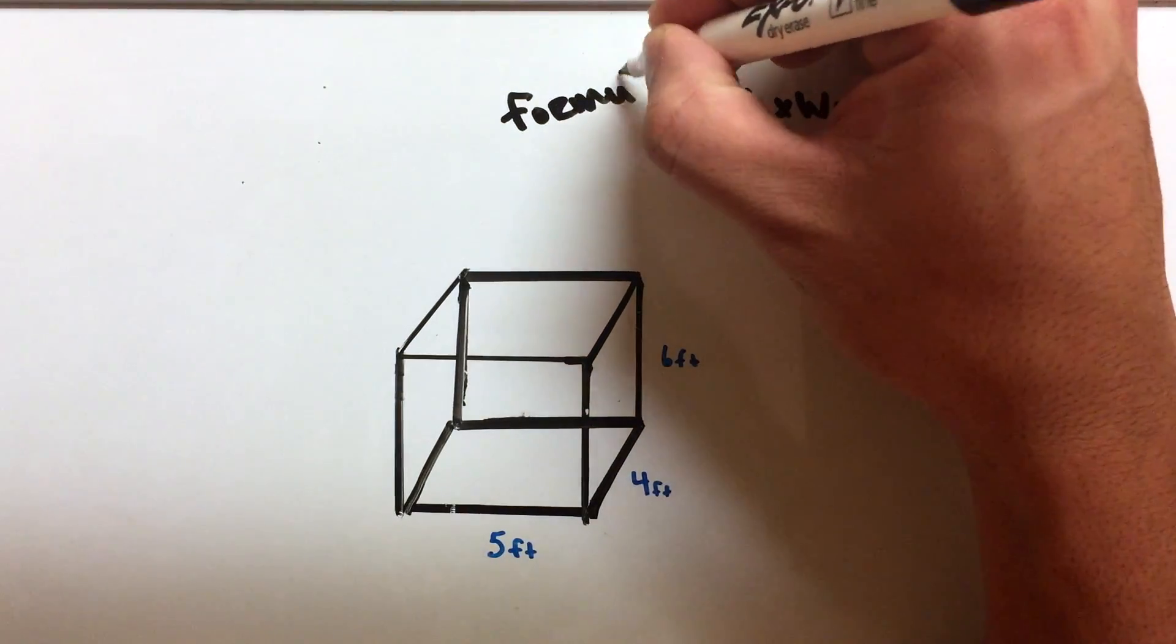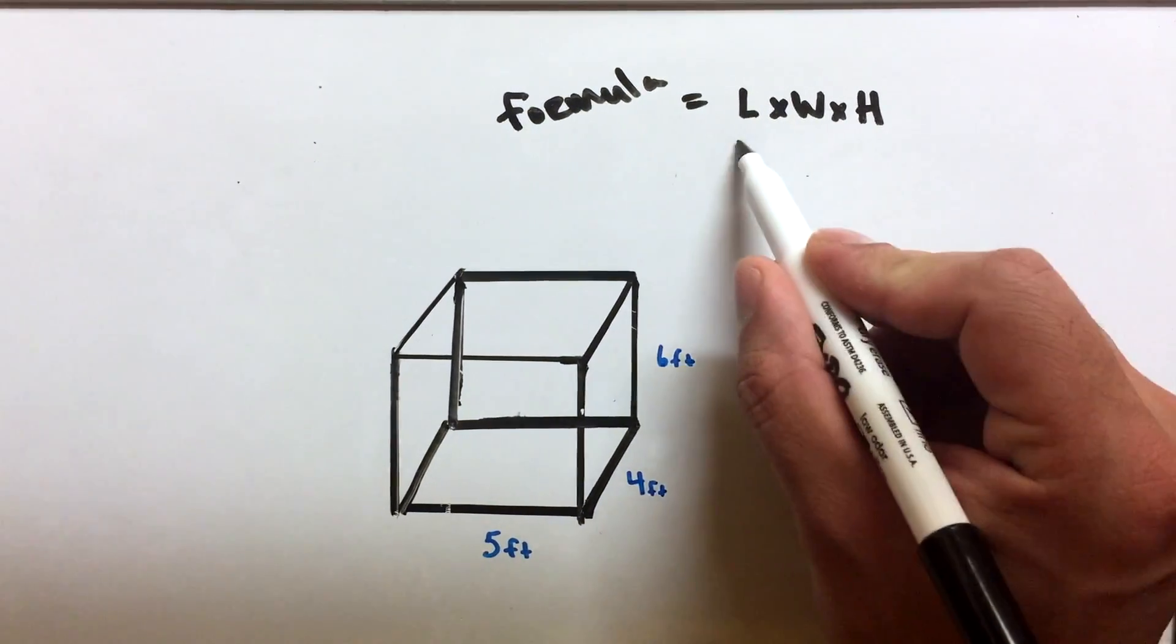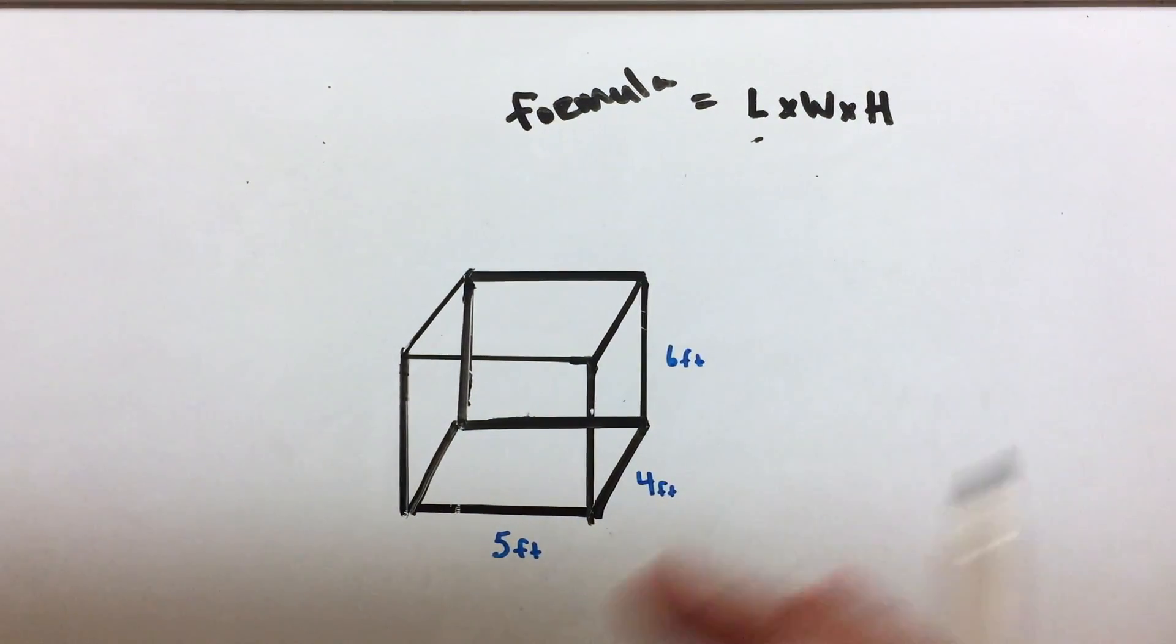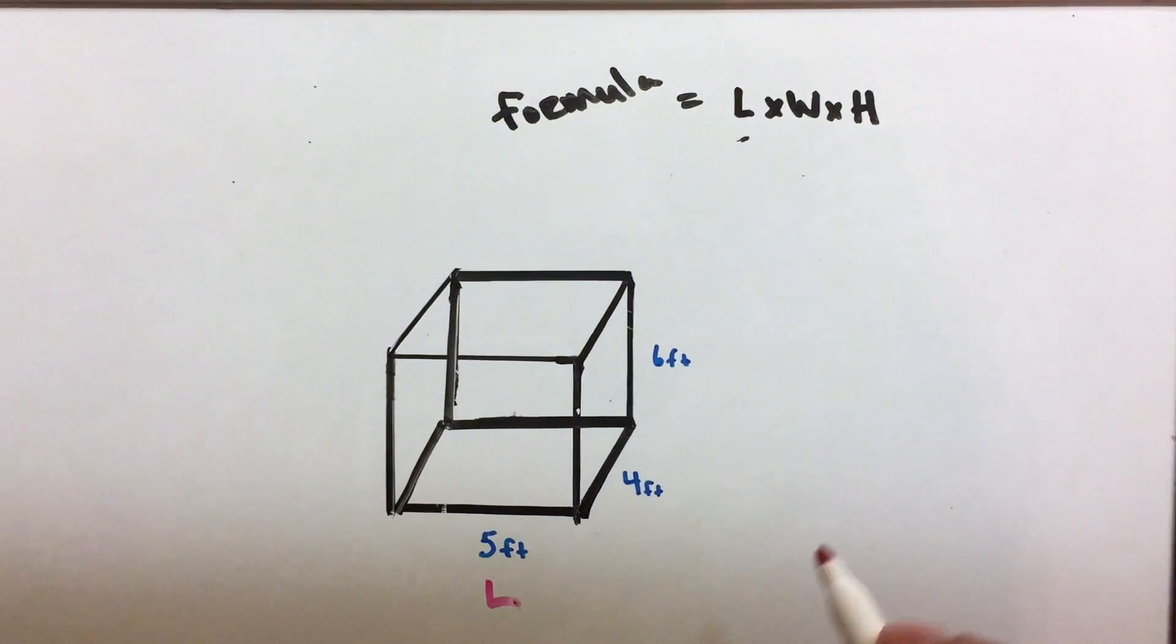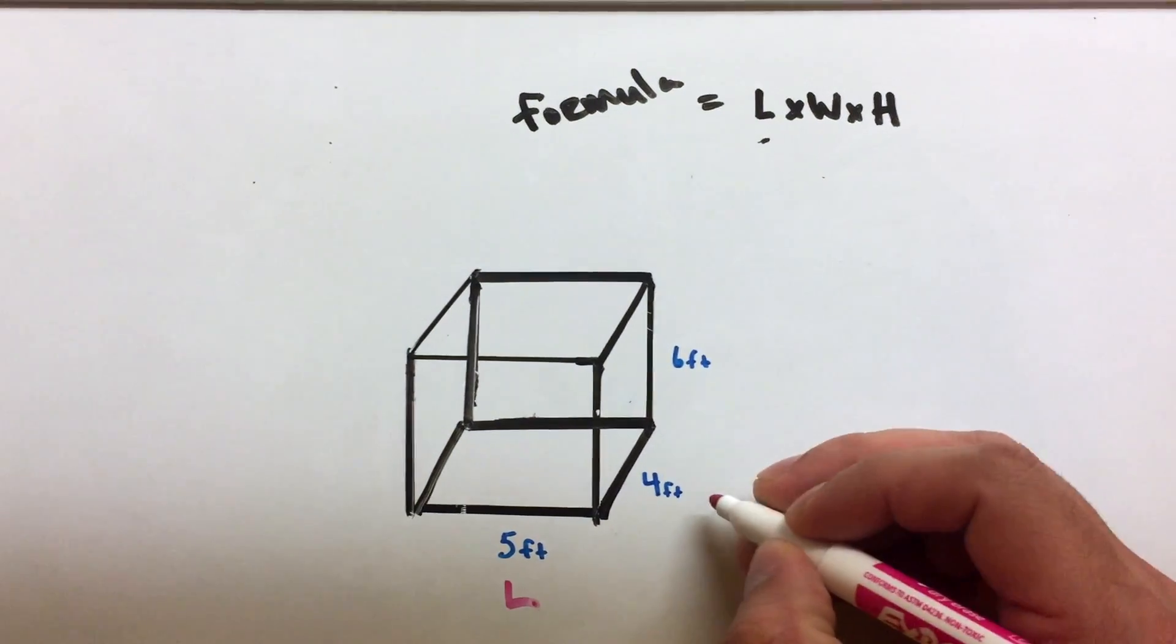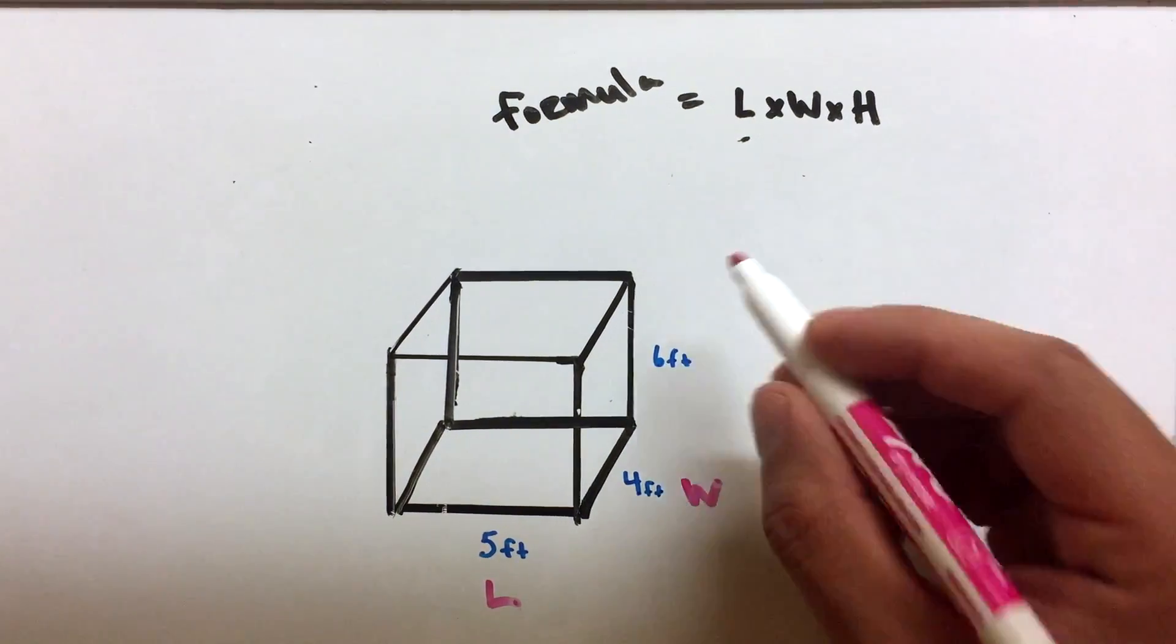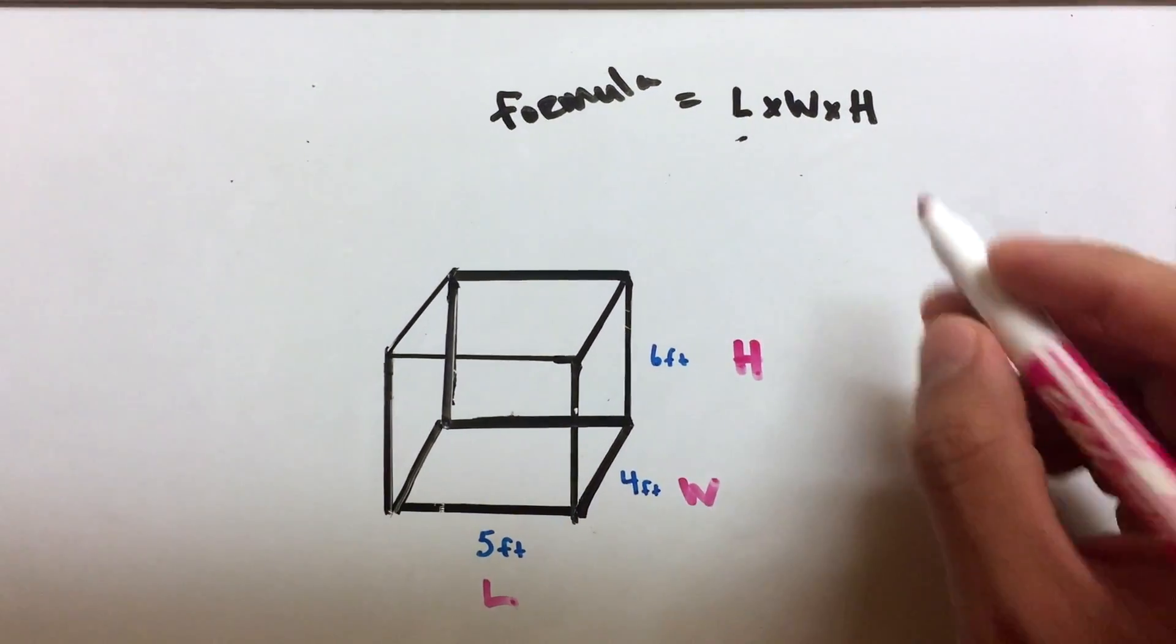Now you might be asking, how do I do this? What does that mean? Let me show you here. The L here is the length. This is the length part of the formula. L is the length. You can see how long it is. The W is the width. That's this part right here. This is the width. You can see how deep it goes. And the H is the height, right here, how high it goes.